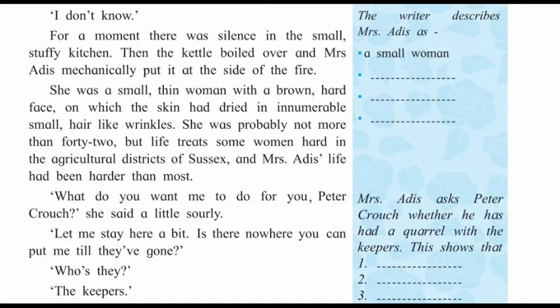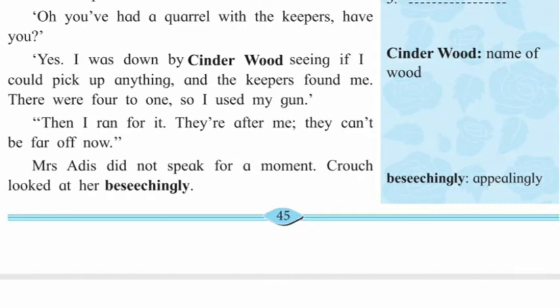'What do you want me to do for you, Peter Crouch?' she said, a little sorely. He replied: 'Let me stay here for a bit. Is there anywhere you can put me till they have gone?' 'Who's they?' 'The keepers.' 'Oh, you have had a quarrel with the keepers, have you?' 'Yes. I was down by Cinderwood, seeing if I could pick up anything, and the keepers found me. There were four to one, so I used my gun. Then I ran for it. They are after me. They can't be far off now.' Peter Crouch explained the incident — he went to Cinderwood, the guards saw him, and he used his gun because he was outnumbered.